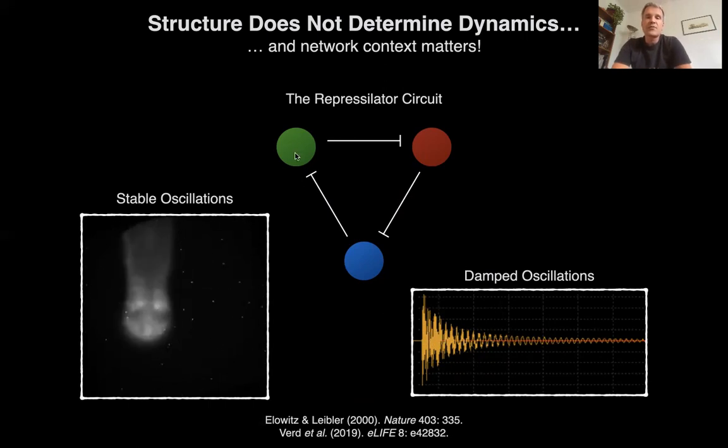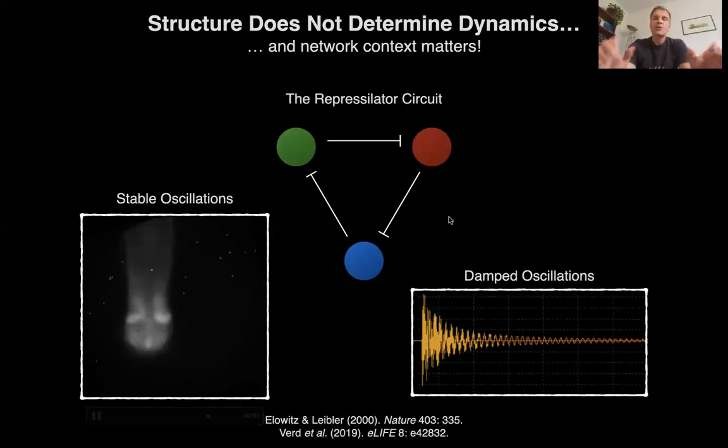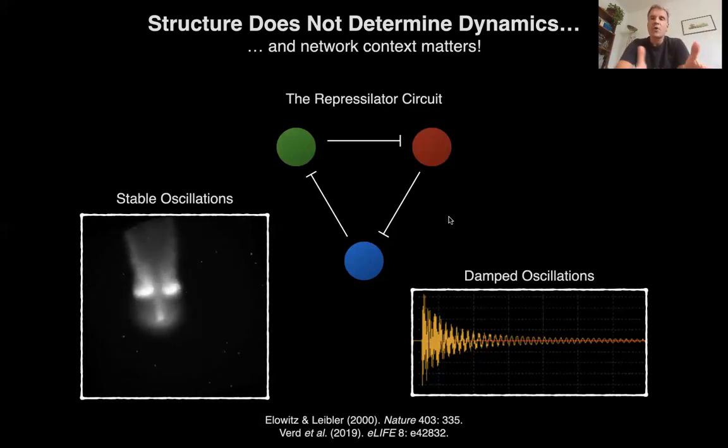So, basically, it will go through the expression of these three genes. The green one, the red one, the blue one. And it will cycle through them. And at some point, it will stop or it won't stop. I'm not mentioning the default behavior of this circuit. For most strengths of the interactions, for most combinations, this circuit doesn't do anything. No expression at all. And that's the case for most circuits. You need to tune them quite finely to get the behavior you would expect to be their default behavior in many cases. So, that's one problem.